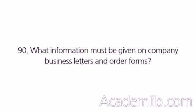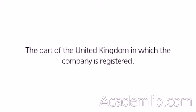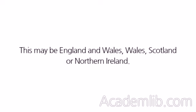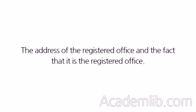What information must be given on company business letters and order forms? The following information must be shown: the full registered name of the company; the part of the United Kingdom in which the company is registered — this may be England and Wales, Wales, Scotland, or Northern Ireland; the company's registered number; and the address of the registered office and the fact that it is the registered office.